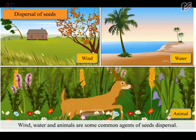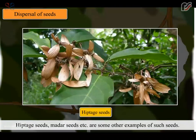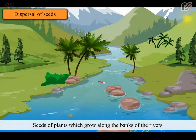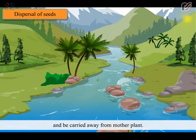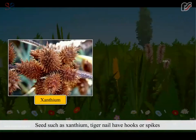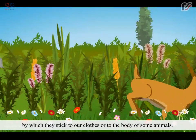Wind, water and animals are some common agents of seed dispersal. Seeds of cotton plant are very light when dry, so these seeds are easily carried away by wind to distant places. Hyptis seeds, madar seeds etc. are some other examples. Seeds of plants which grow along the banks of rivers or seas are dispersed by water. Coconut has a fibrous outer covering or husk which helps it to float on water and be carried away from the mother plant. Lotus is another example. Seeds such as xanthium and tiger nail have hooks or spikes by which they stick to our clothes or to the body of some animals, and this is how they are carried away from the mother tree.